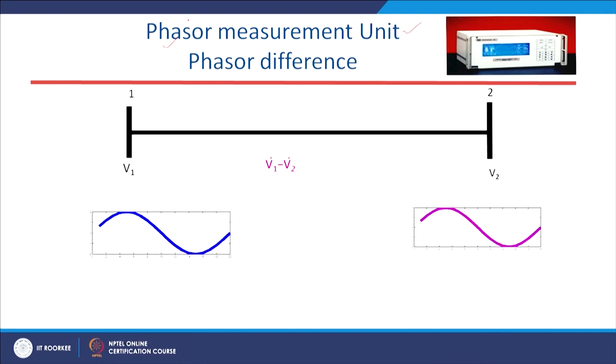Consider two buses where V1 is the voltage phasor of bus 1 and V2 is the voltage phasor for bus 2. In the SCADA system, the magnitude of voltage at each bus is known, but not the phase angle. However, nowadays distribution and transmission networks are becoming active — passive to active — due to integration of renewable sources like small hydro power plants, wind turbines, and solar systems.